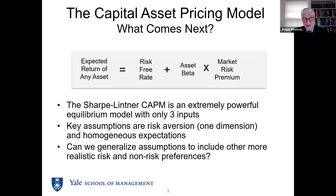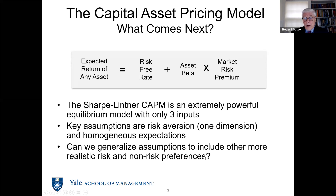This model was actually developed way back by Bill Sharpe and John Lintner back in the 1960s, and Sharpe won a Nobel Prize. In the CAPM, there's only one kind of risk aversion involved — one dimension to it. The real key assumptions underlying the CAPM are the one dimension of risk aversion and homogeneous expectations, where everybody has the same view of the world.